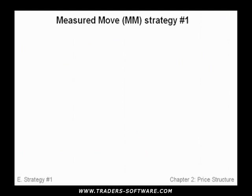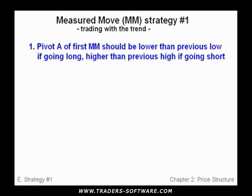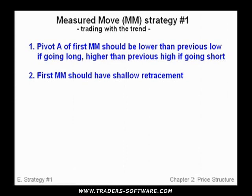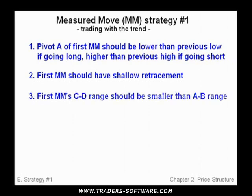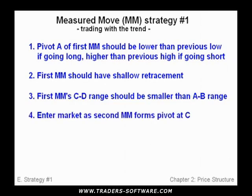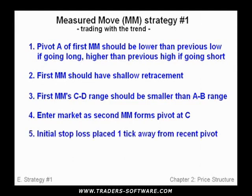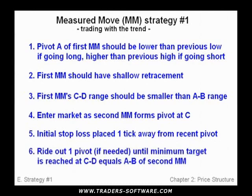Here are the rules to trade measured move strategy number one. Rule one: pivot A of the first measured move should be lower than the previous pivot low if going long, and higher than the previous high if going short. Rule two: the first measured move should have a shallow retracement. Rule three: the first measured move's CD range should be smaller than the AB range. Rule four: enter the market as the second measured move forms pivot C. Rule five: the initial stop loss is placed one tick away from the recent pivot. Rule six: ride out one pivot if needed until the minimum target is reached at CD equals AB off the second measured move.